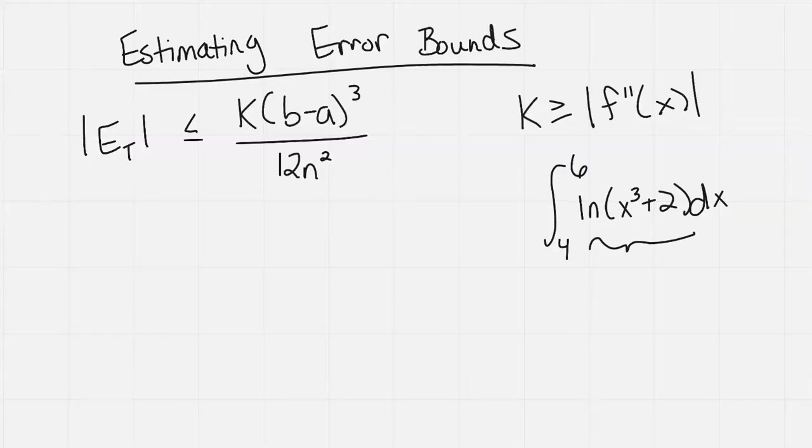So I'm going to go back to my paper here and say, okay, so that means k has to be greater than the 0.1653. So I'm going to go ahead and say, let's let k equals 0.17.